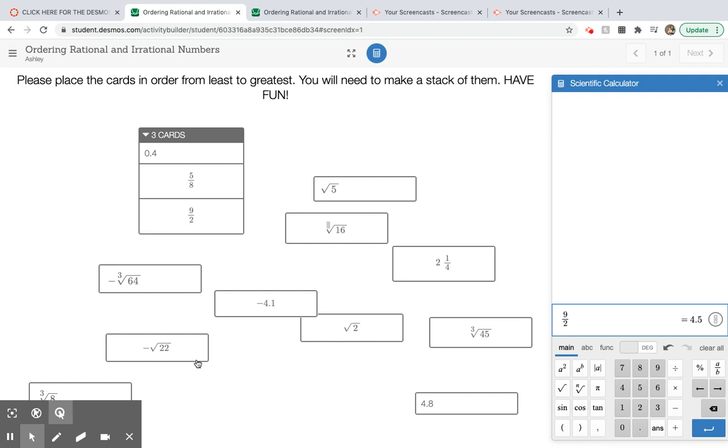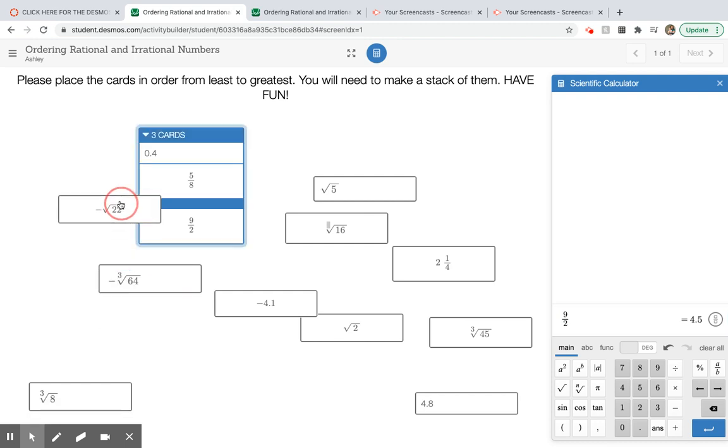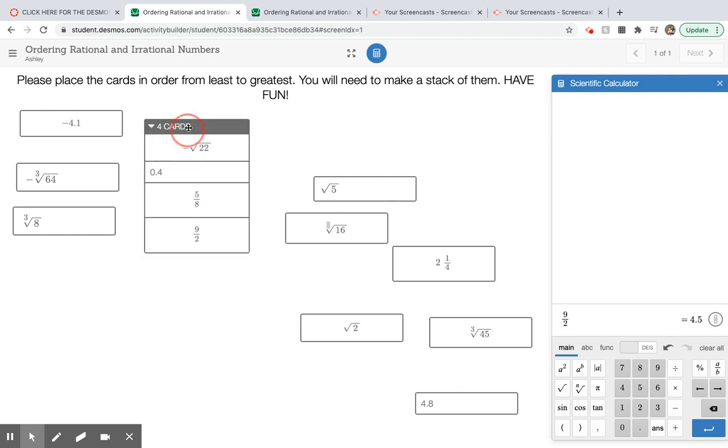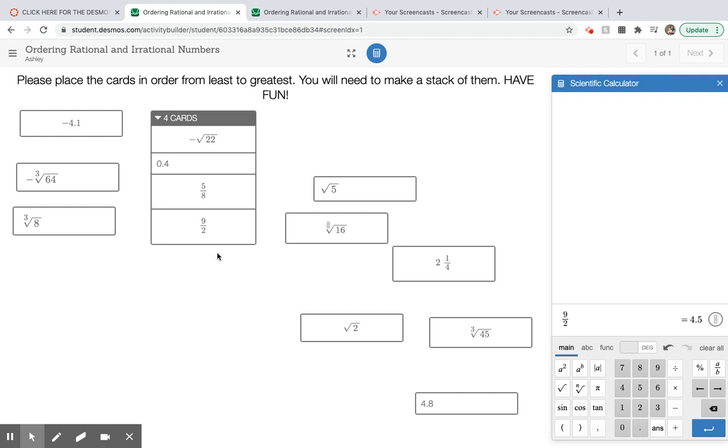Okay, and then you can keep adding numbers. Like this guy, this negative root 22. Well, I know he's going to be a lot smaller than anything of these because they're all positive, so I'm just going to put him there for a placeholder as well until I can compare him with some of the other negative numbers and get those in order. So you'll have to convert them all to decimals so that you can move them around in the correct order. Least is at the top, greatest is at the bottom.